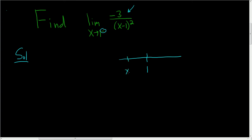Here's x, and it's approaching 1 from the left, which means that x is smaller than 1. The easiest way to do this is to just plug in a number that's really close to 1 but smaller than 1 — for example, 0.99.